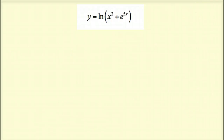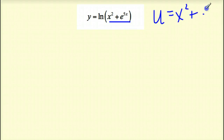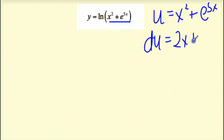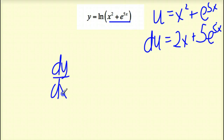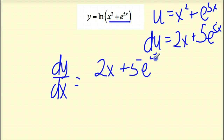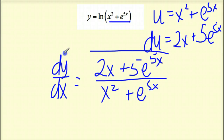Let's look at the next problem. This is just an ln, so I set everything after the ln as my u. u is equal to x squared plus e to the 5x. I find my du, which is 2x plus e to the 5x times the derivative of 5x, which is 5. So dy/dx equals 2x plus 5e to the 5x, all over x squared plus e to the 5x.